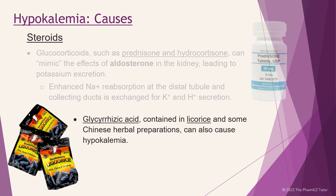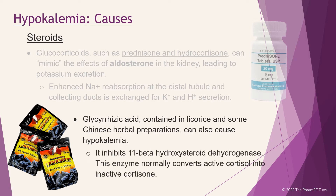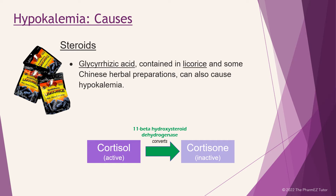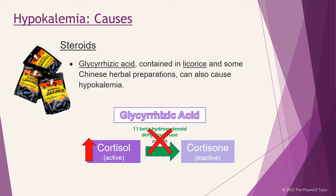Glycyrrhizic acid, contained in licorice and some Chinese herbal preparations, can also cause hypokalemia. It inhibits 11-β-hydroxysteroid dehydrogenase, the enzyme that normally converts active cortisol into inactive cortisone. Glycyrrhizic acid inhibits this enzyme, causing an increased level of active cortisol, leading to enhanced steroid effects, including hypokalemia.